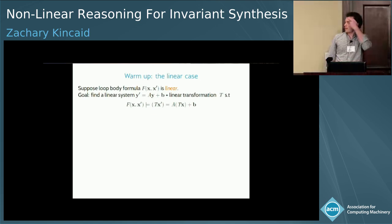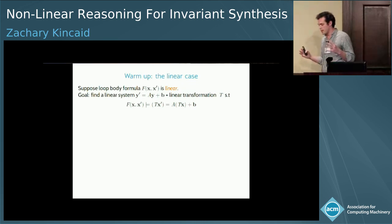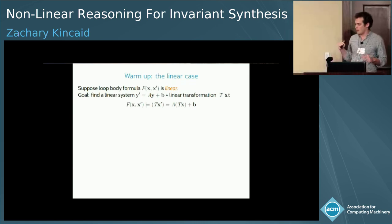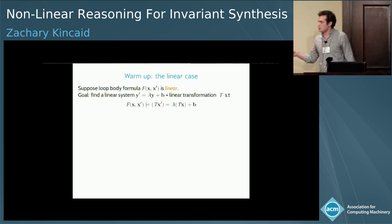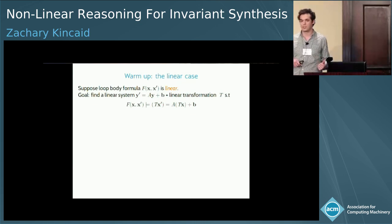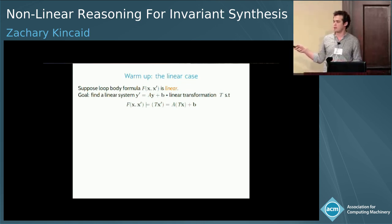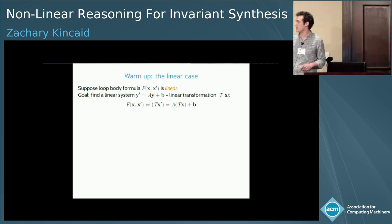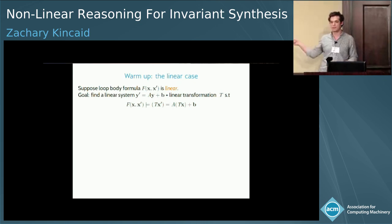The first step is to talk about how to extract recurrence relations from loop bodies. My assumption is that I'm starting with a transition formula that represents one iteration of the loop — any nested loops have already been summarized, any control flow is encoded into the formula. I further assume this formula is linear; we'll get to the nonlinear case in a little bit. Our goal is to find a system of recurrences that approximates this transition formula.